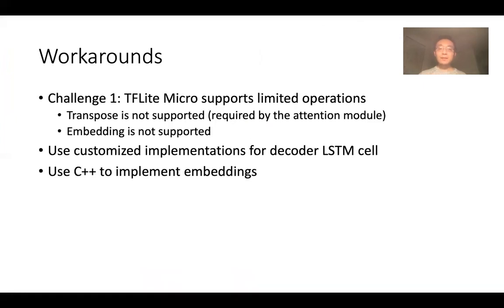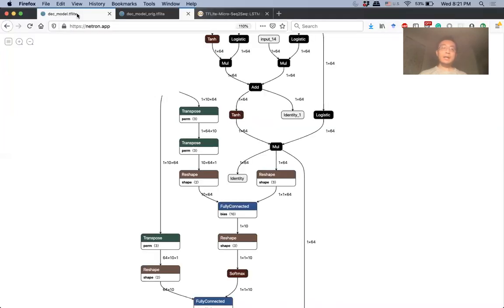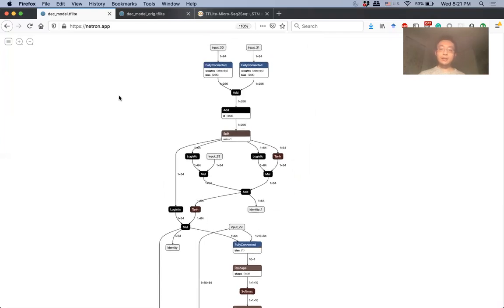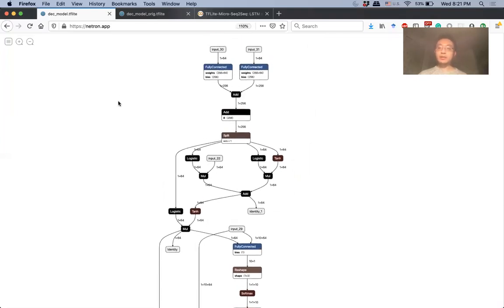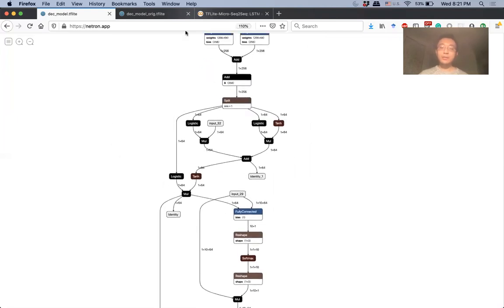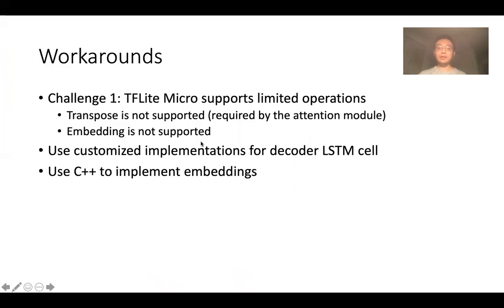To solve this problem, I used a customized implementation for the decoder LSTM cell and I intentionally only use operations supported by TF-Lite Micro. If you look at this new computation graph of the customized implementation, there are no such unsupported operations anymore.